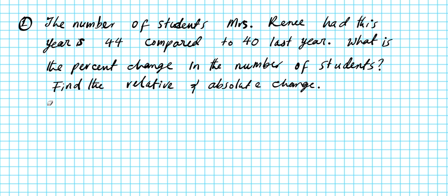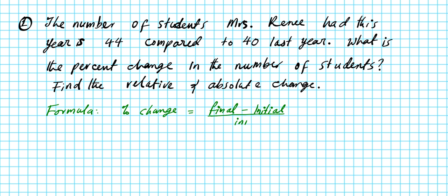Let's write down the formula for percent change again to refresh our memory. The percent change is: (final amount minus initial amount) divided by the initial amount, then multiplied by 100. In this problem, the final value is the current number of students that Mrs. Rene has — she currently has 44.